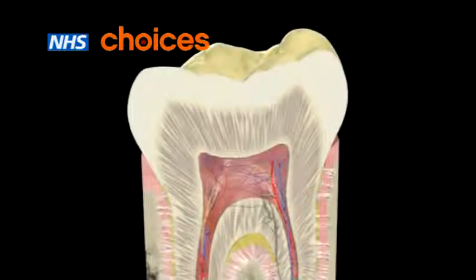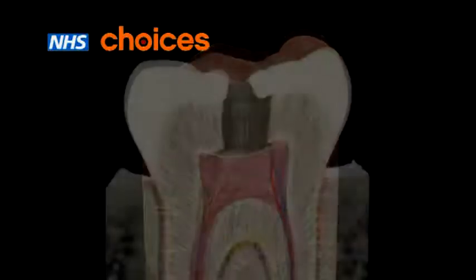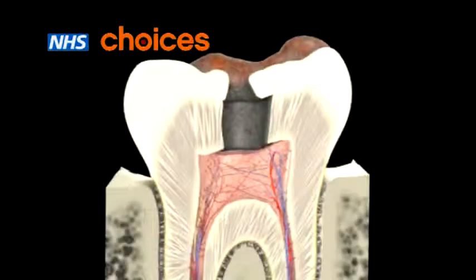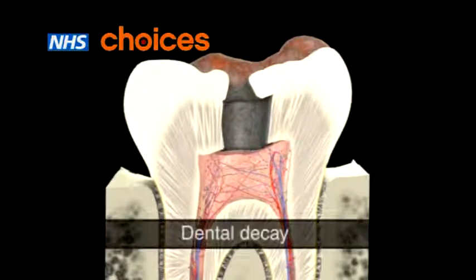Bacteria are found in plaque, which is a by-product of food and saliva. Plaque bacteria produce acid, which makes holes in the enamel that eventually reach the centre of the tooth. This is known as dental decay.